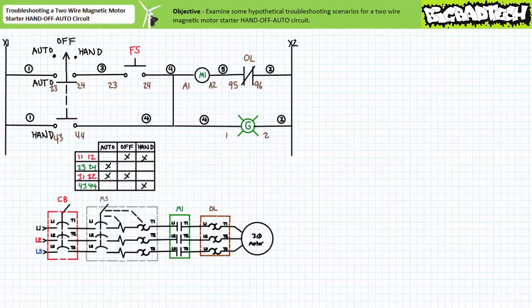All right, this about wraps up this brief application exercise. In conclusion, we examined some troubleshooting scenarios for the two-wire magnetic motor starter hand-off auto circuit. We examined the circuit's response to loss and restoration of power, overloads, malfunctioning automatic input, improperly wired input, the effects of opens in different areas of the circuit, and the effects of manual overrides.